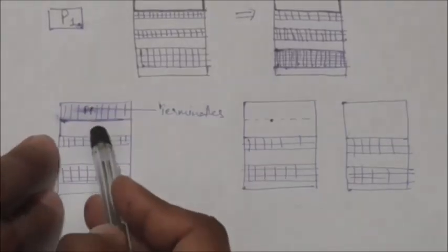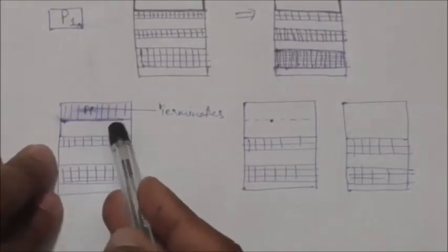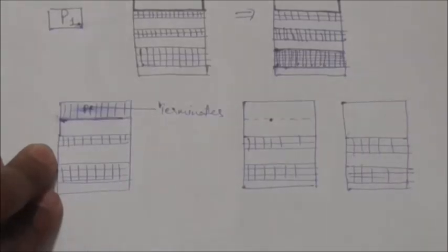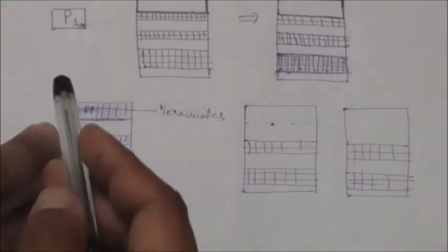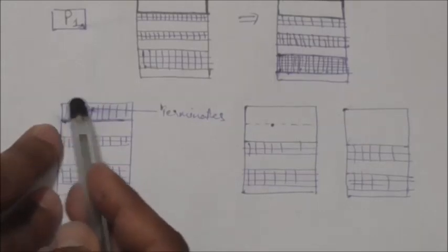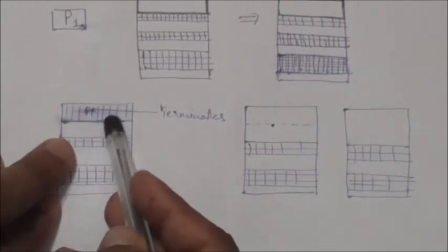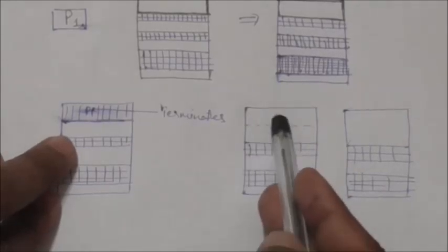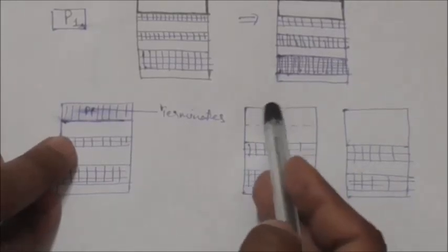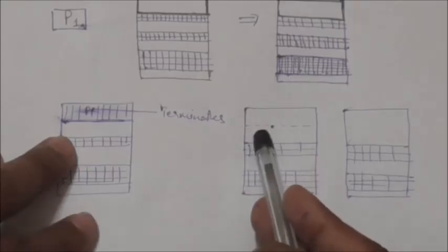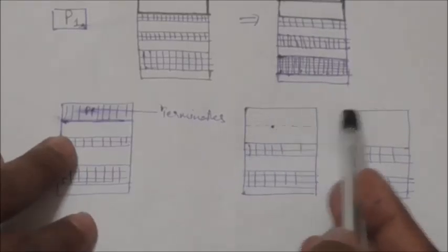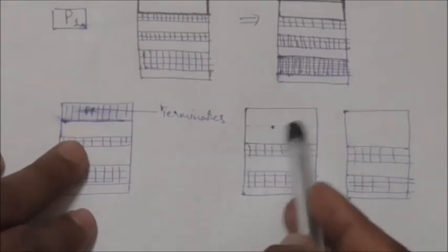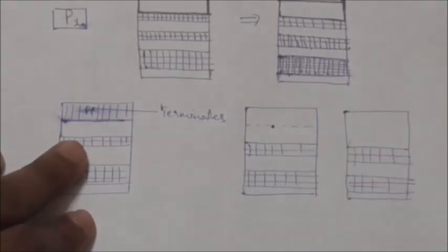When the process terminates, it releases its block of memory, which is then placed back into the set of holes. If the new hole is adjacent to other holes, then these adjacent holes are merged to form one larger hole.